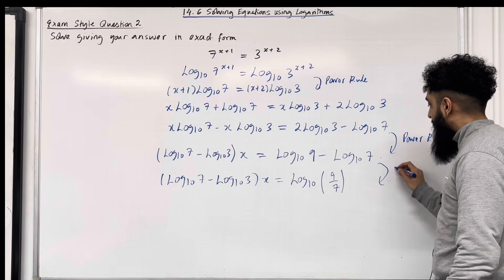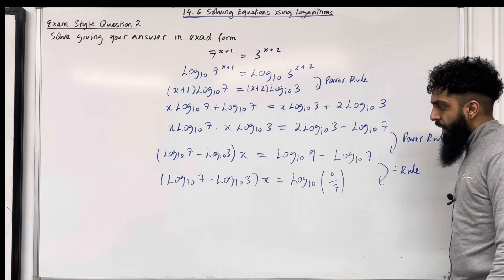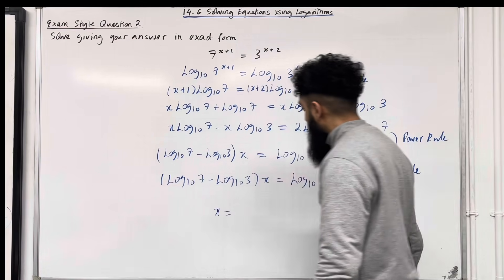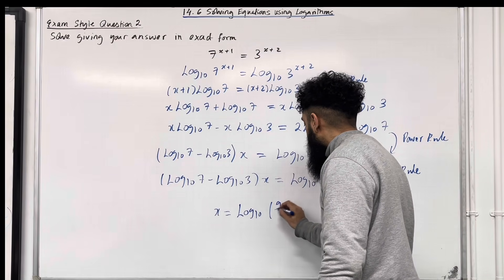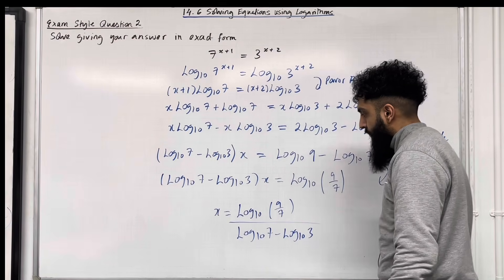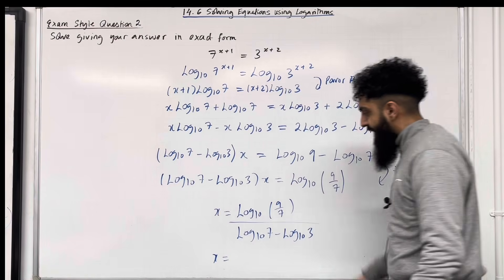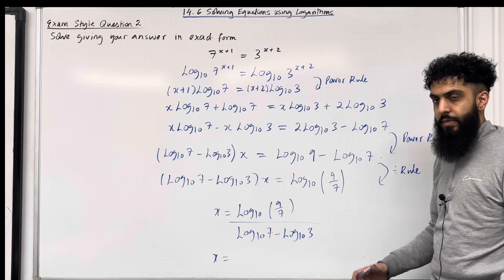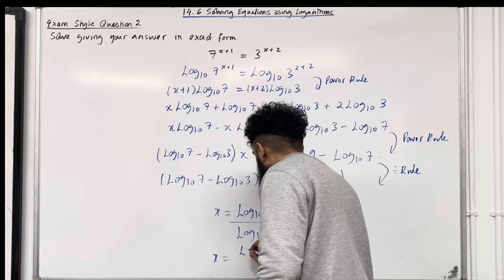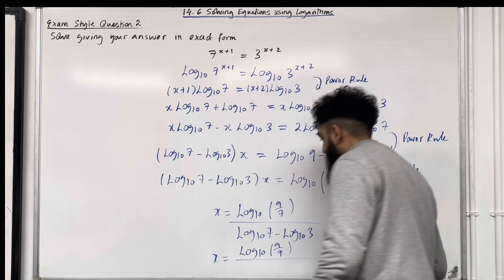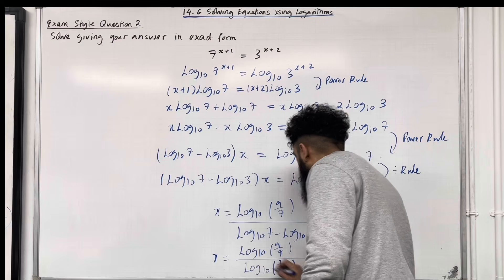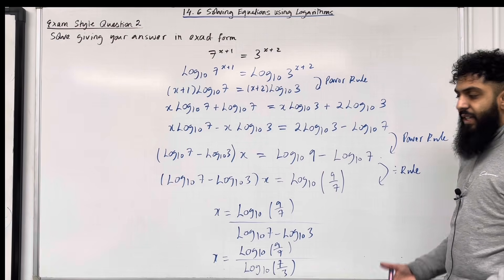We have log base 10 of 9 divided by 7 on the right-hand side. We have applied the division rule for logarithms. Now I can take the bracket to the right-hand side and divide to give the exact value of x. So x equals log base 10 of 9 over 7, divided by log base 10 of 7 minus log base 10 of 3. The denominator can be simplified using the division rule for logarithms — we've got a minus with the same base of 10 — so the denominator can be rewritten as log base 10 of 7 divided by 3. That is the final exact answer for x.